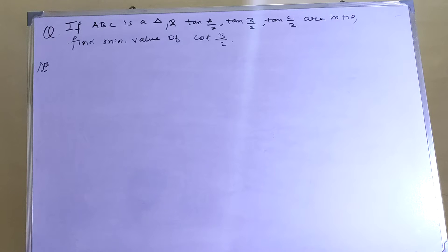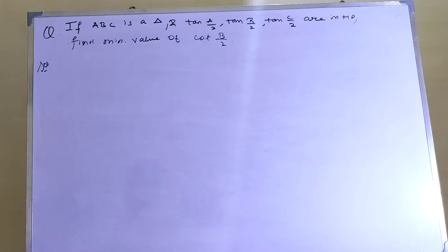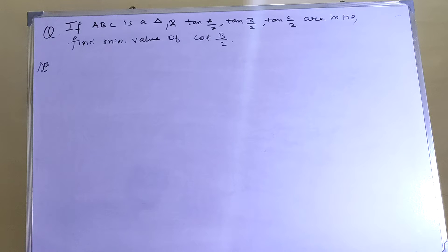Hello guys, hope you all are doing very good. In today's question: if ABC is a triangle and tan(A/2), tan(B/2), and tan(C/2) are in HP, we have to find the minimum value of cot(B/2). Please give it a try, otherwise let's go through it.